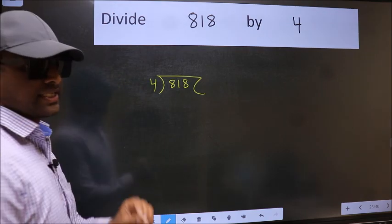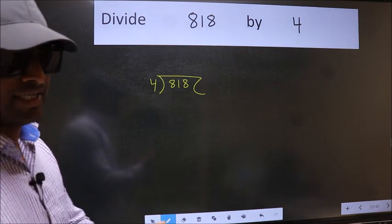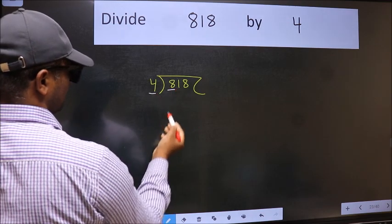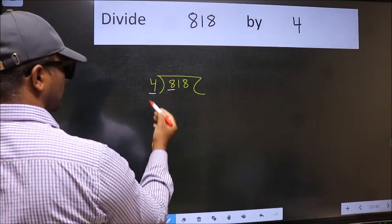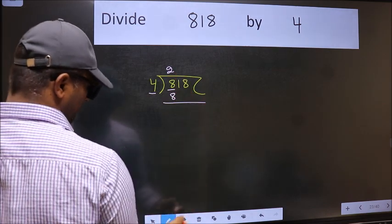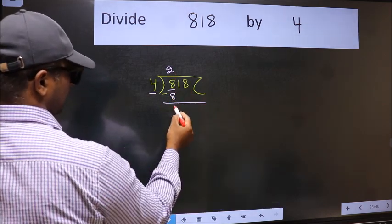This is your step 1. Next, here we have 8 and here 4. When do we get 8 in the 4 table? 4 times 2 is 8. Now we should subtract. We get 0.